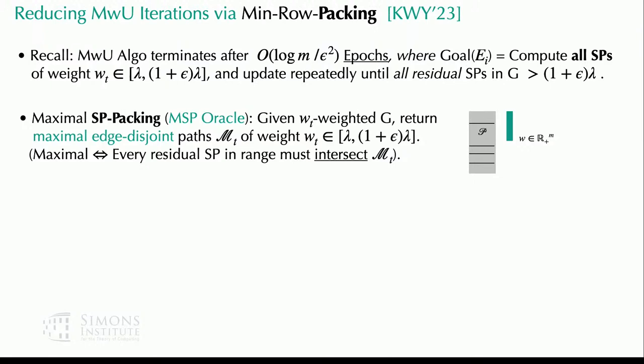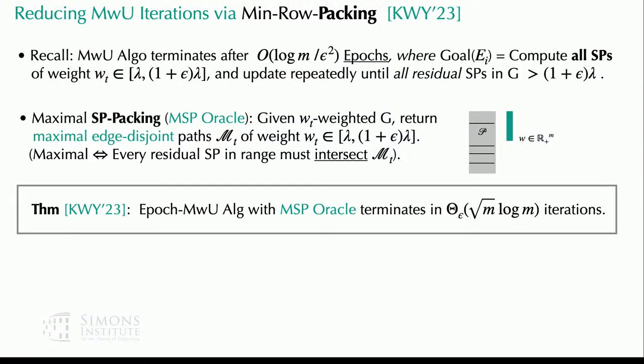For single commodity, this is basically blocking flows. The main theorem is that if you implement the epoch-based multiplicative weight algorithm with this packing oracle — the min-row packing oracle — you only need root-m iterations, and this is tight. Currently the epsilon dependence is one over epsilon cubed; reducing from one over epsilon to the fourth to one over epsilon cubed is already non-trivial.